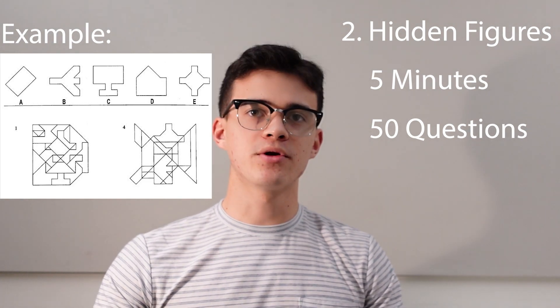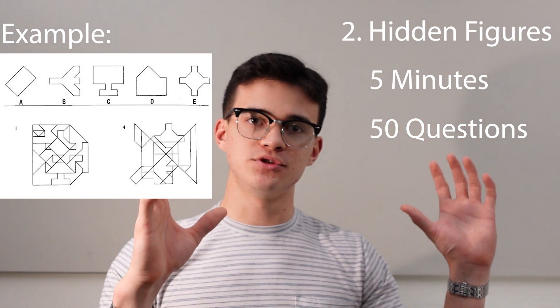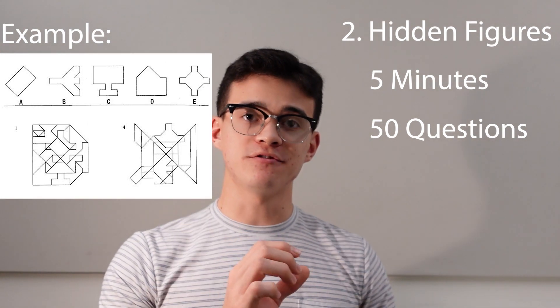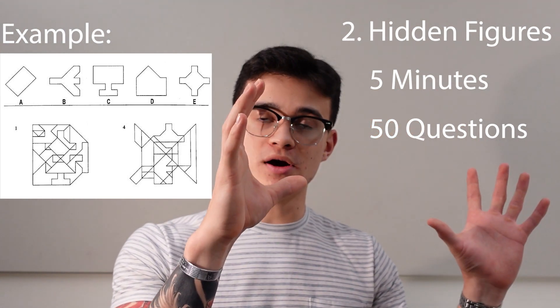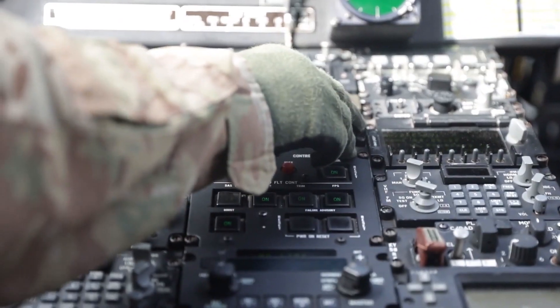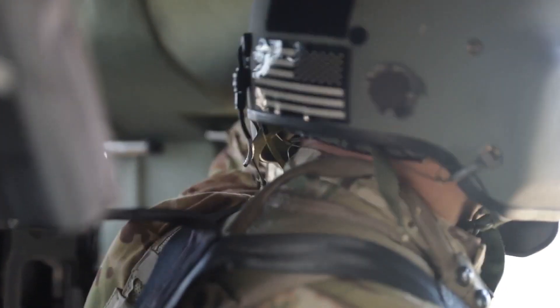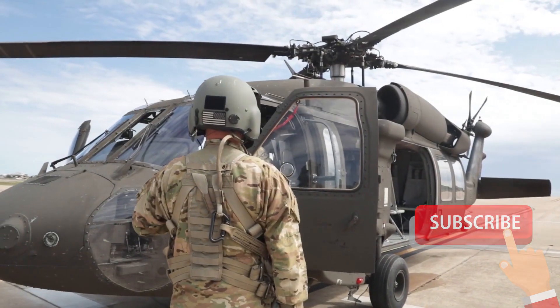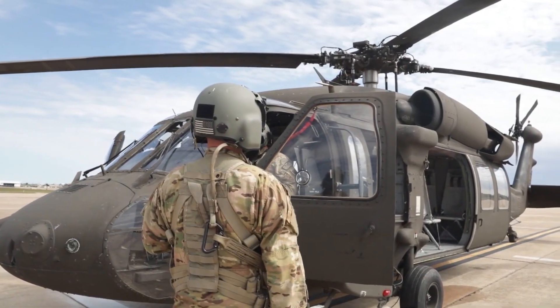For hidden figures, you're given a box full of geometric shapes and five specific shapes you have to find within it. It's honestly the hardest part of the test — at least it was for me. I totally bombed it, but that's okay because doing better on another section helps your overall composite score. You can practice hidden figures, but you can't really study for it — same goes for simple drawings. It's more of a reaction-based test.